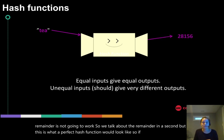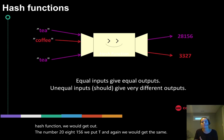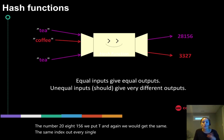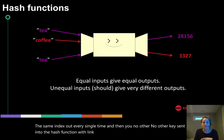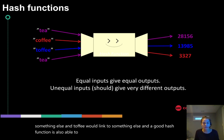So if we put T into the hash function, we would get out the number 28156. If we put T in again, we would get the same index out every single time. And no other key sent into the hash function would link back to 28156. So coffee would link to something else and toffee would link to something else.